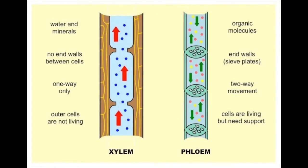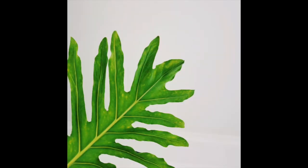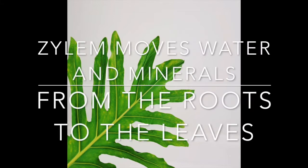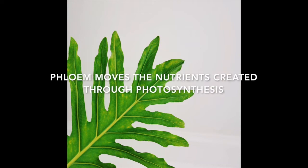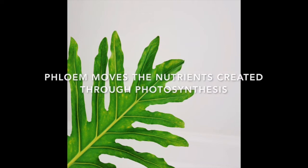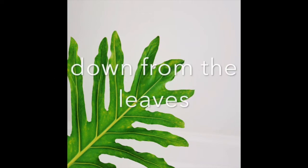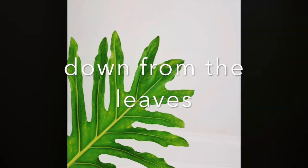Those little strings are actually bundles of xylem and phloem tissue. They're like little straws that transport water and minerals and other nutrients throughout the parts of the plant. Xylem moves water and minerals from the roots to the leaves, and phloem moves the nutrients created through photosynthesis down from the leaves to the other parts of the plant.